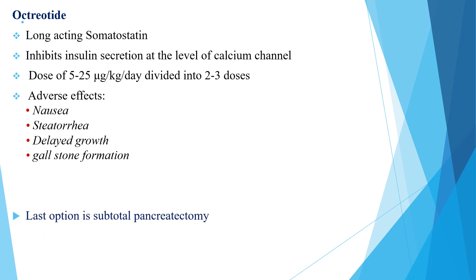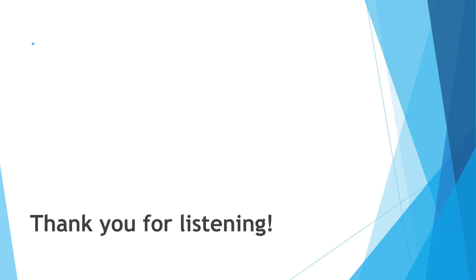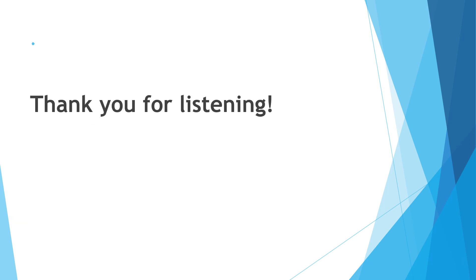The last option is subtotal pancreatectomy for hyperinsulinism. This is a summary of the approach to a child with hypoglycemia. Thank you for listening.